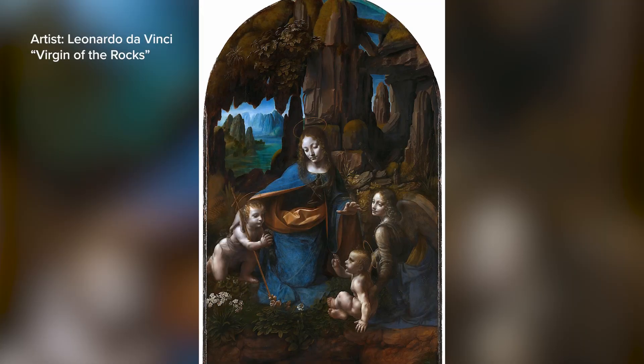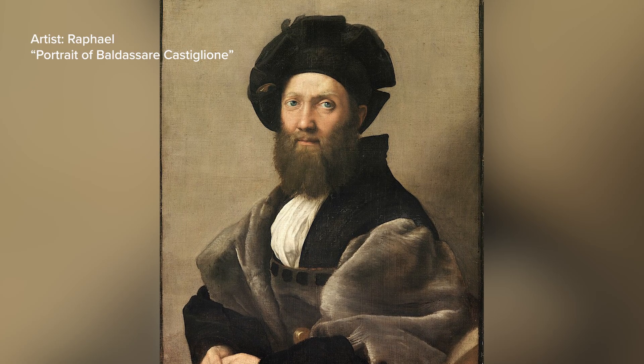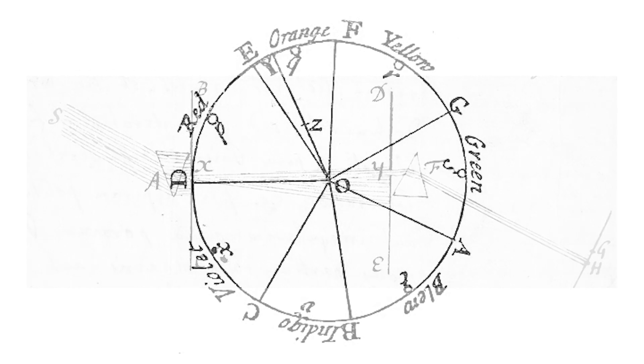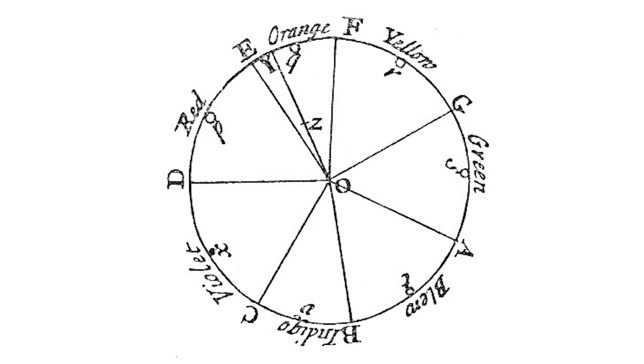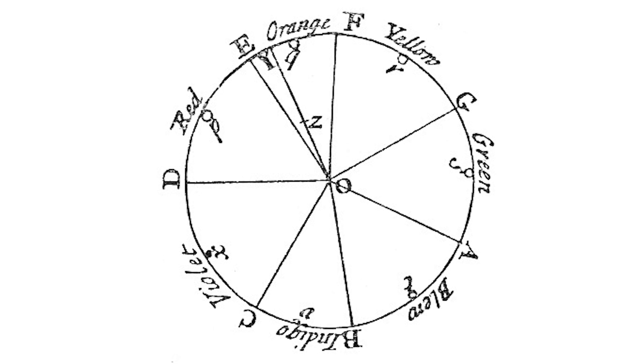If you could hold a model representing every possible color of paint, what shape would it be? That's just one question that color theory tries to answer. Artists have long understood the connection between light and color, but it wasn't until Isaac Newton's 1666 color wheel that the relationship between colors of light was scientifically explained.